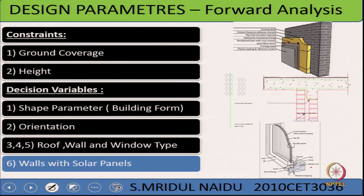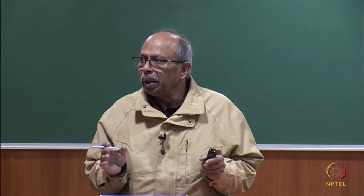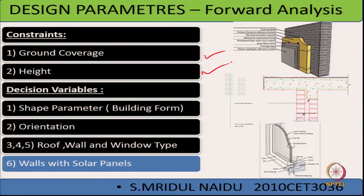What are the factors that affect energy-efficient building design? First, ground coverage is part of the functional requirement and is a constraint. Height and building form are decision variables — that is, the factors which affect energy efficiency. Building form, orientation, roof, wall, and window type are key parameters, because materials in the roof or wall have several components — we have seen something called U-value earlier. Walls can also have solar panels which will generate energy.